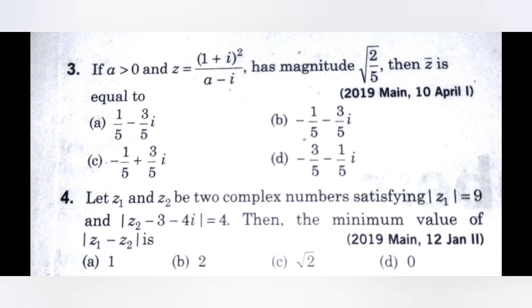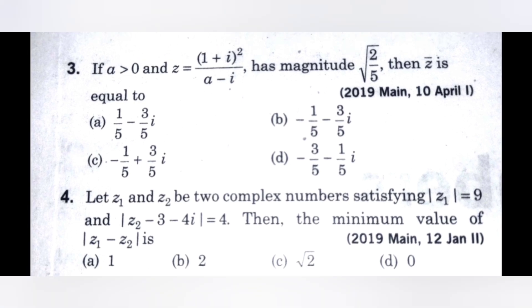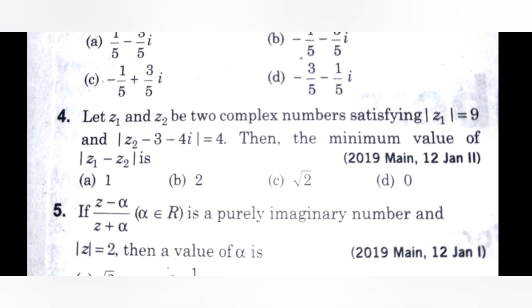The next question. Let Z1 and Z2 be two complex numbers satisfying mod Z1 equals 9 and mod Z2 minus 3 minus 4i equals 4. Then the minimum value of mod Z1 minus Z2 is. Check the options.